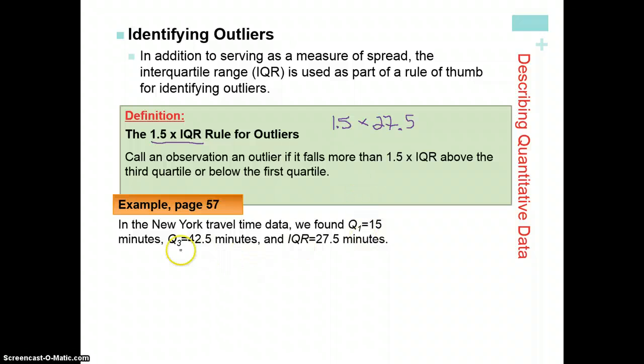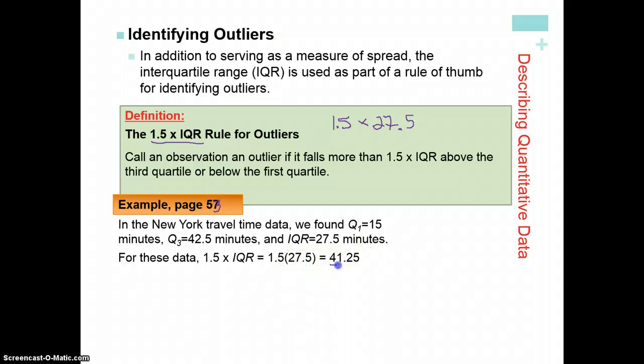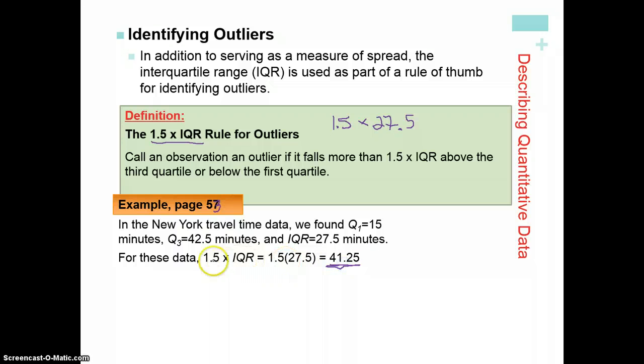We have Q3 is 42.5. If you remember from the last, this should be a 53, I messed up right there. It's page 53. Q1 was 15, Q3 is 42.5, our IQR was 27.5. That was just 42.5 minus 15. For these data, 1.5 times the IQR is 41.25. So our interquartile range times 1.5 is that.